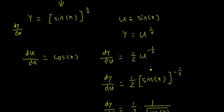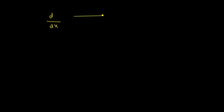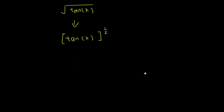Next, let's do the derivative of square root of tangent x. Again, looking at square root of tangent x — you can rewrite this as tangent of x to the power of 1 half. It's the function tangent of x inside another function to the power of 1 half, so you can use the chain rule.